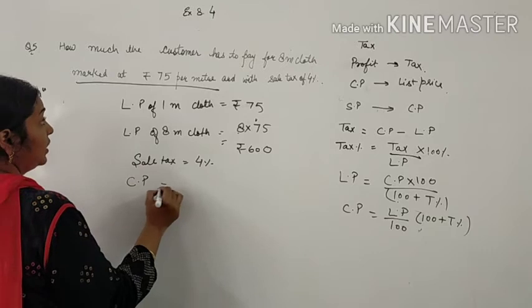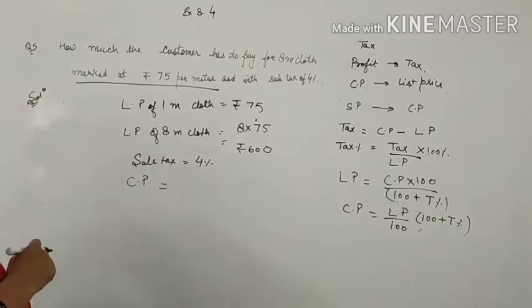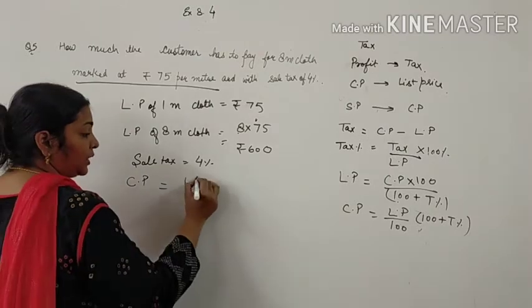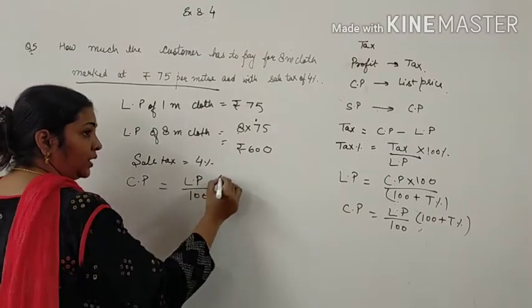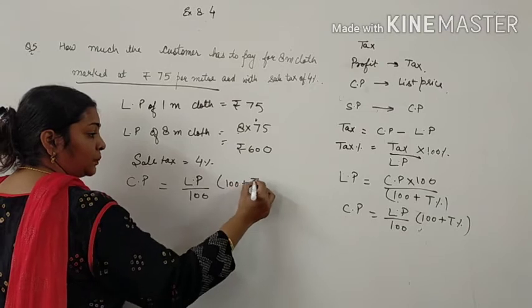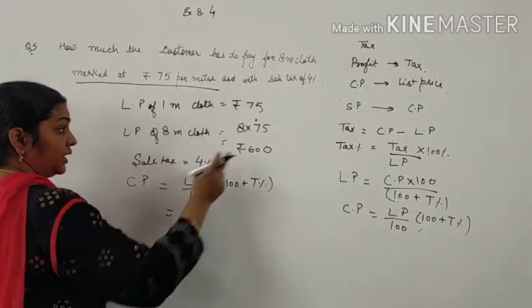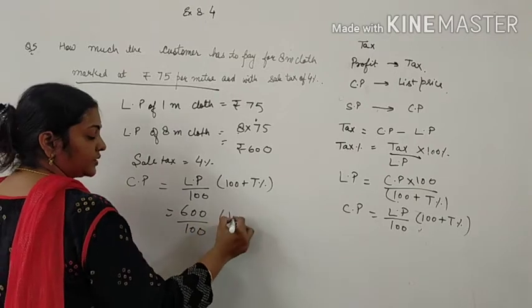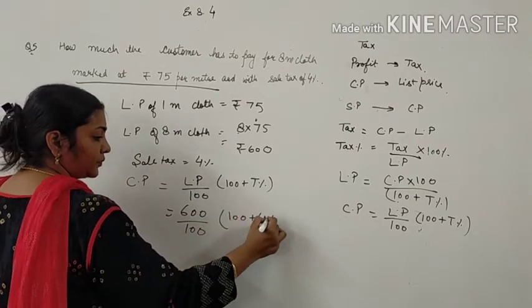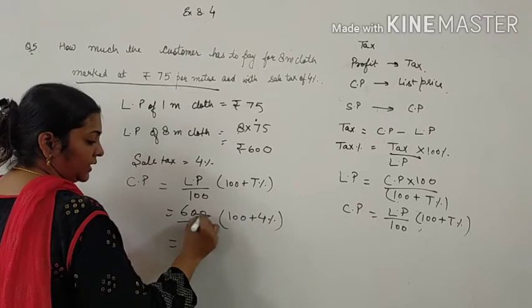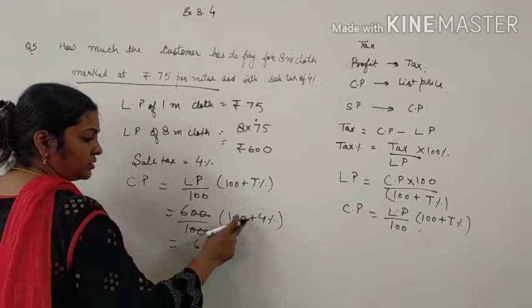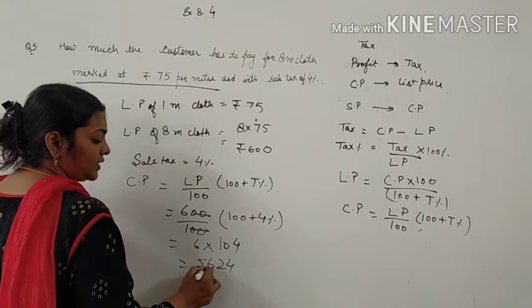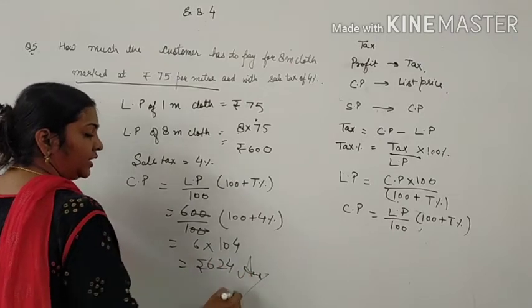Sales tax is 4 percent. Now you need to find the amount which the customer has to pay. That means what will be the cost price? It will be list price into 100 plus tax percent. List price is 600, tax is 4 percent. It will be Rs. 624.